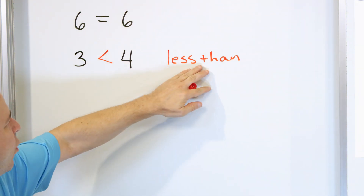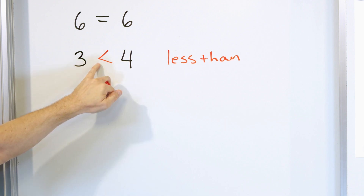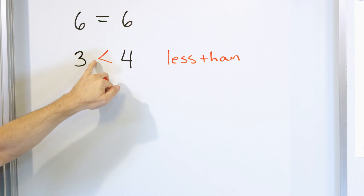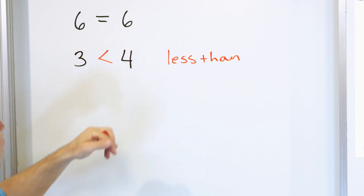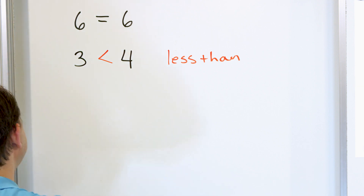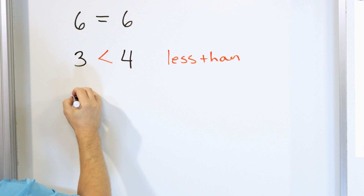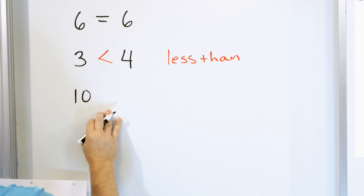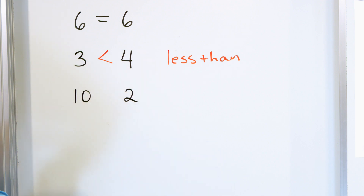The most important thing — more important than the words — is that the arrow always points to the smaller number and the big side always opens up to the larger number. Now, what if we have a different situation where someone has 10 rocks and somebody else has two rocks?